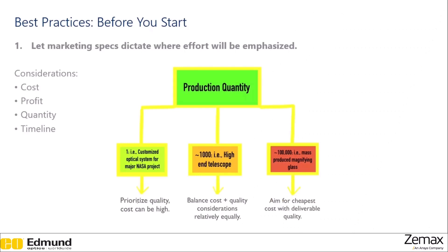Before you start, it's good to understand the market specs and let them dictate where your effort will be emphasized. You're looking at what type of project you're working on. If it's a custom optical system — say for a major NASA project where you're sending a single copy to space — the priority will be high quality and costs can often be high. Whereas on the other end of the spectrum, if this is a product where you're mass manufacturing and selling hundreds of thousands or millions, then you're generally aiming for a cheaper cost with the deliverable quality. Somewhere in the middle is a high-end optical component used in a fancy microscope, where there's a balance between cost and quality considerations.